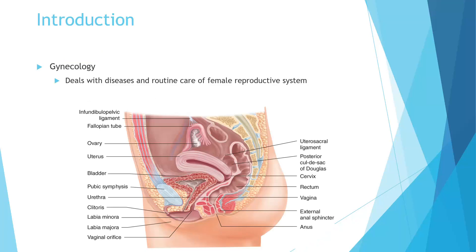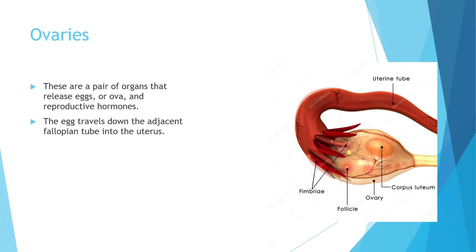With gynecology, this is specifically dealing with diseases and care of the female reproductive system. It often goes hand in hand with the OB portion, but gynecology deals with the entire reproductive system, whereas the OB part deals specifically with a pregnant reproductive system. We've got our ovaries — this is a pair of organs. Most people have two that release the eggs or the ova and the reproductive hormones. Every month, most women have these follicles that develop and enlarge, and then the ovum bursts forth. The egg releases and comes out.